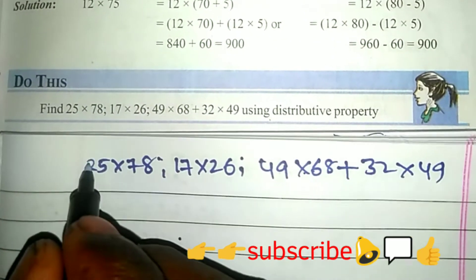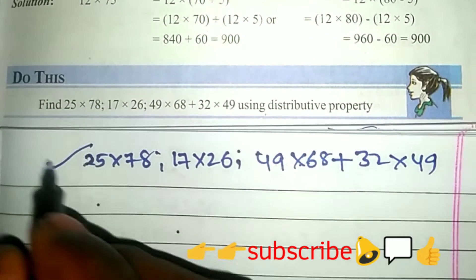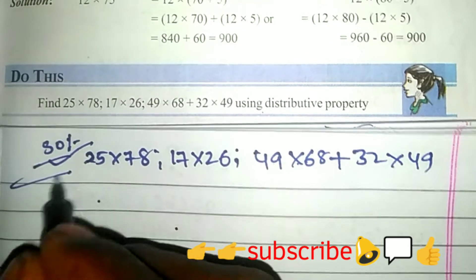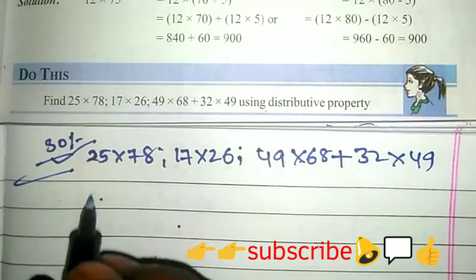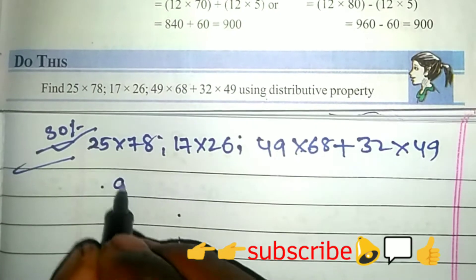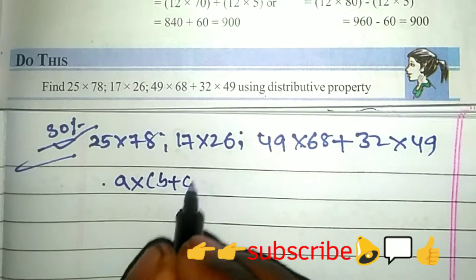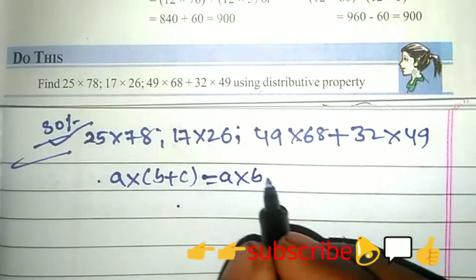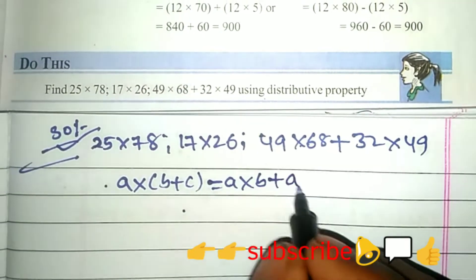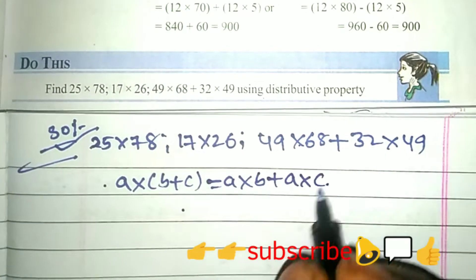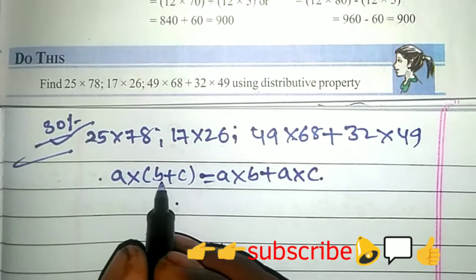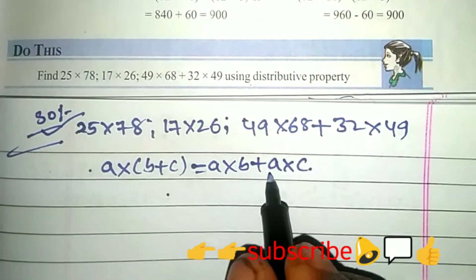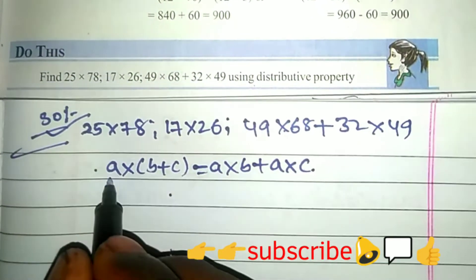Please check the video for a clear explanation. If you are new to this channel, subscribe. Now, the distributive property states: A into (B plus C) is equal to A into B plus A into C.